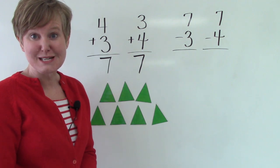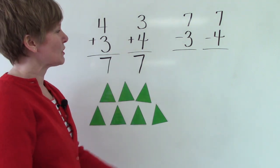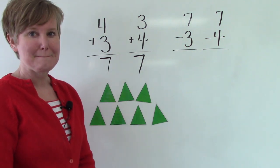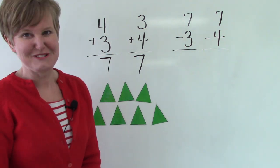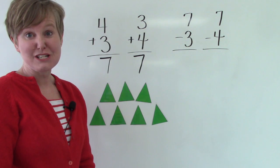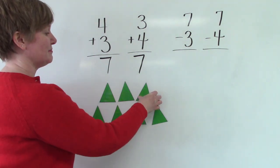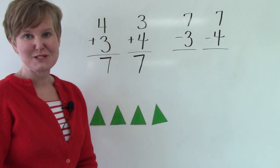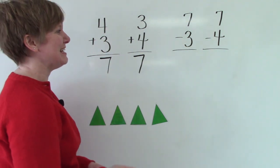So let's see if they'll help us as we subtract. We have 7 and we're going to take 3 away. I bet you already know what the answer is. But let's just use our triangles. If I take 3 away, how many are left? You're right. It is 4.